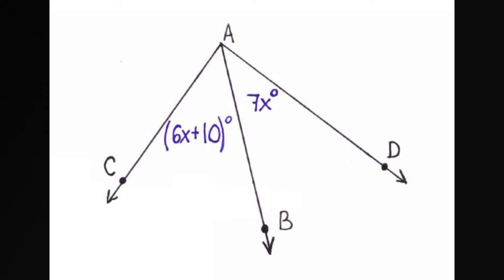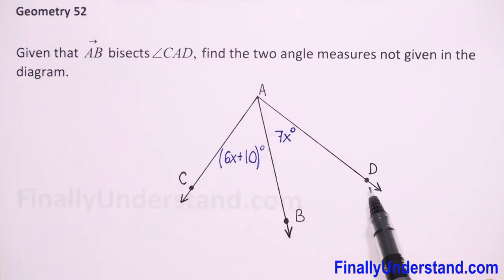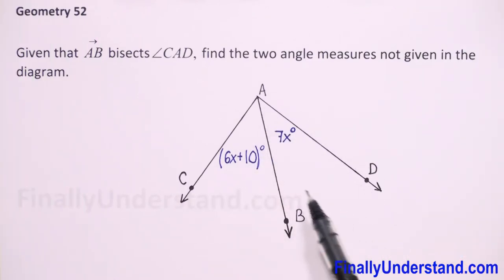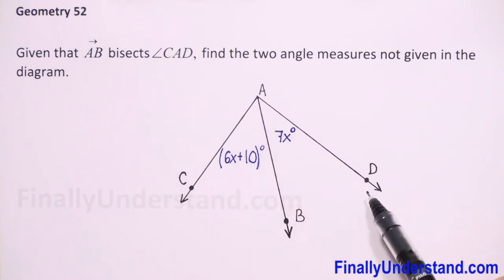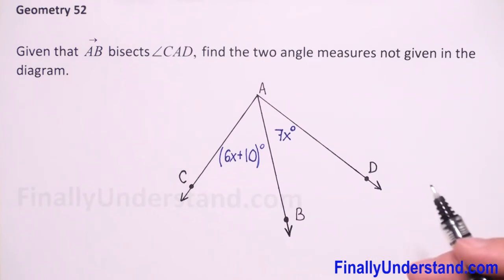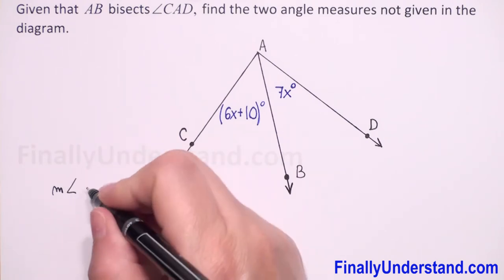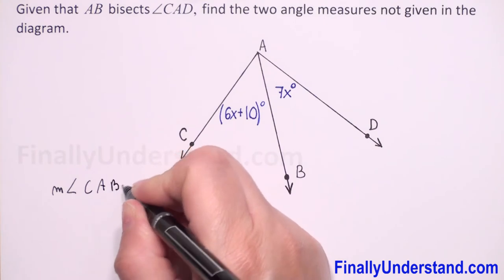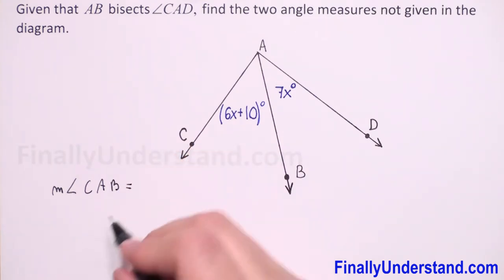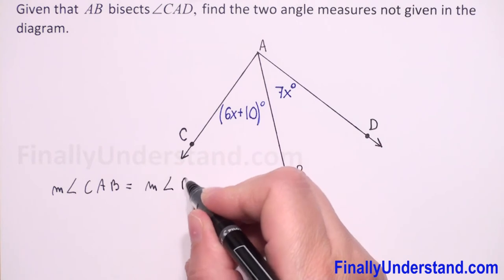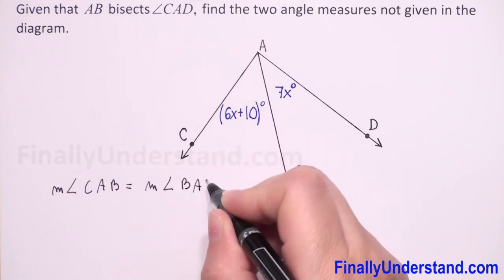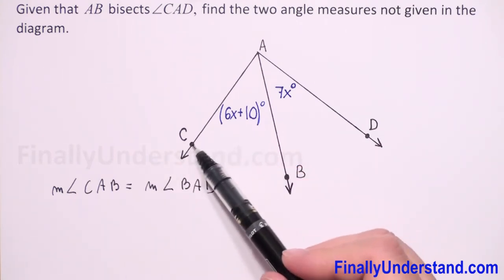We have given that ray AB bisects angle CAD. What it means is that the measure of angles CAB and BAD are equal. So let me write this: the measure of angle CAB is equal to the measure of angle BAD.